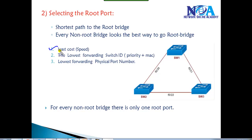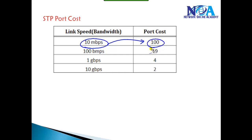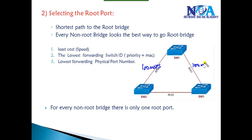The first condition is cost, based on bandwidth. The default port cost values are: 10 Mbps link = cost 100, 100 Mbps = cost 19, 1 Gig link = cost 4, and 4 Gig link = cost 2. I'm assuming 100 Mbps links, which is the default most commonly used, so the cost to reach on each port is 19.